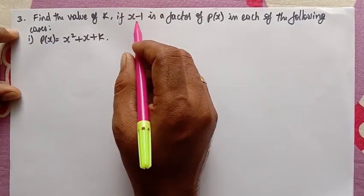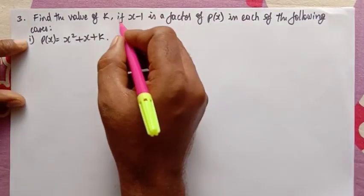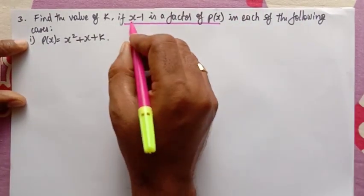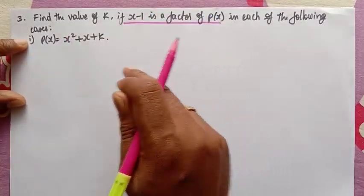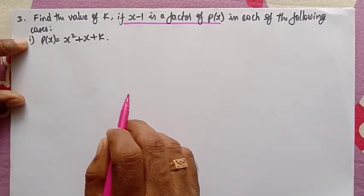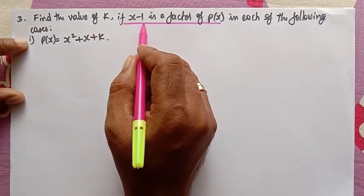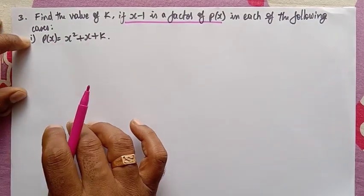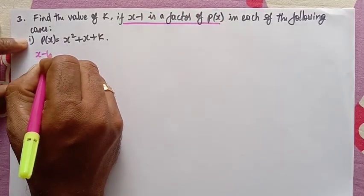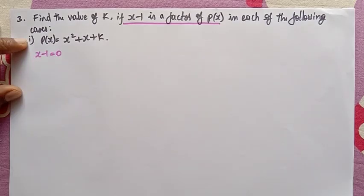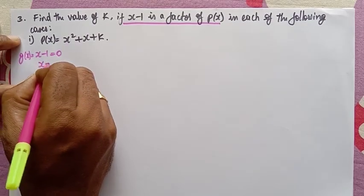Find the value of k. If x minus 1 is a factor of p of x in each of the following cases, we should not forget that when x minus 1 is a factor of p of x, the value of the polynomial reduces to zero when we substitute the value of x obtained by equating x minus 1 to zero. So x minus 1 equals zero gives x equals 1.